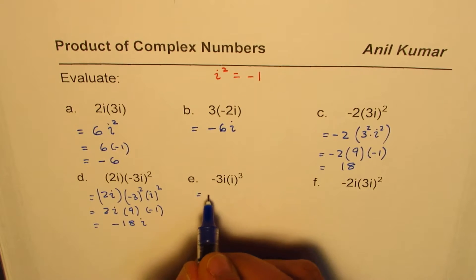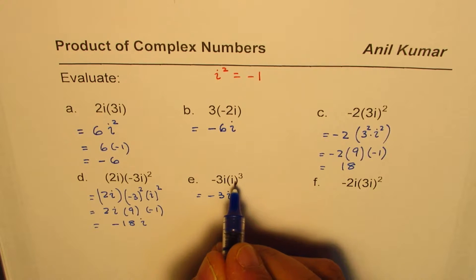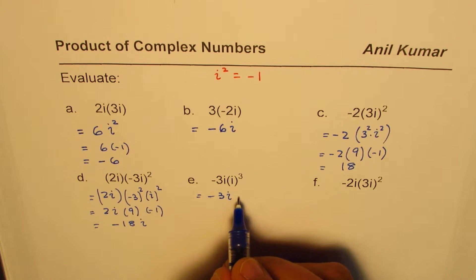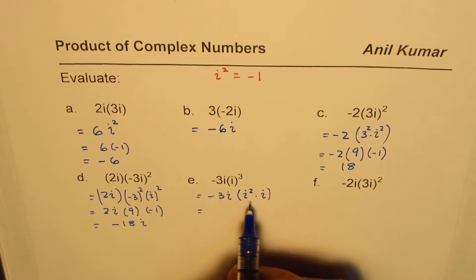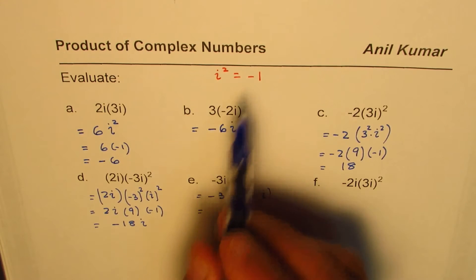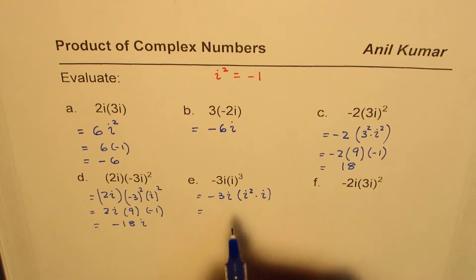Example e: -3i times i³. So what I will do here is write i³ as i² times i. Why did I do so? Because I know i² is -1.